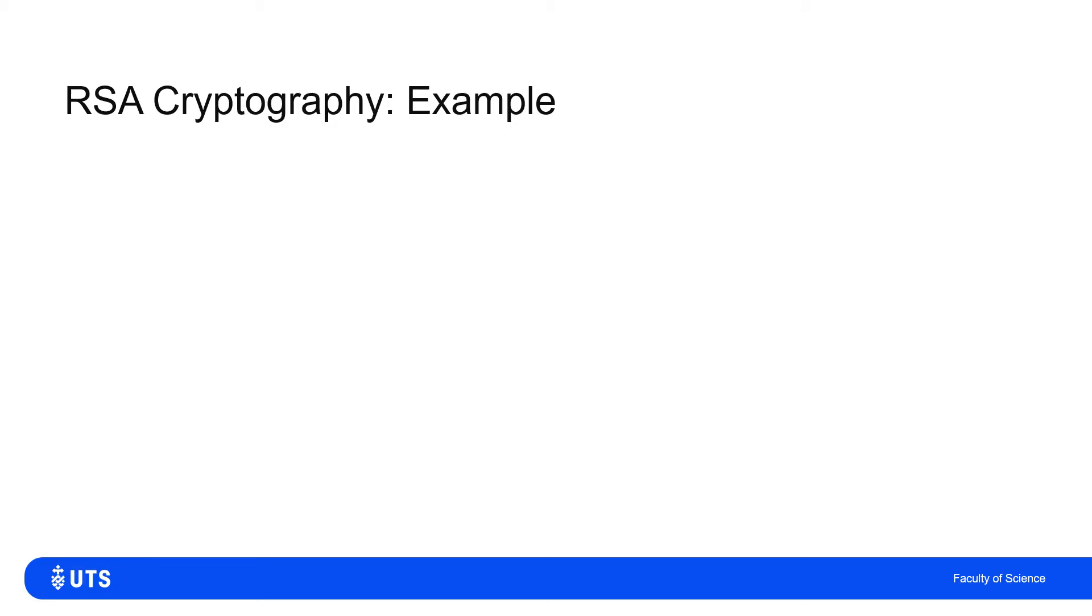At this point, if you haven't watched the video on the theory of RSA cryptography and how it relies on Euler's theorem, please go back and at least watch that video so you've got some idea where these numbers are coming from.